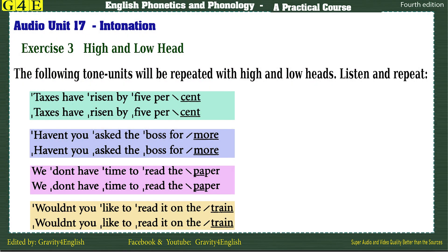Exercise 3. High and low head. The following tone units will be repeated with high and low heads. Listen and repeat. Taxes have risen by 5%. Taxes have risen by 5%. Cause they were close to me. Four of them came.